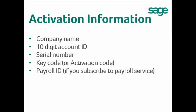Your activation information includes your company name, 10-digit account ID, serial number, and keycode or activation code. You will also get your payroll ID if you have the payroll option with your Sage business care plan.